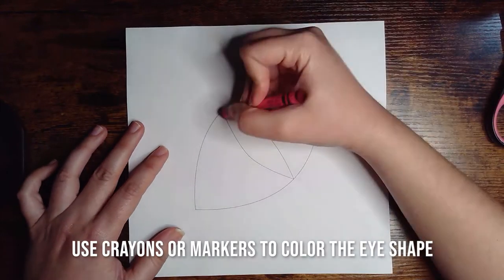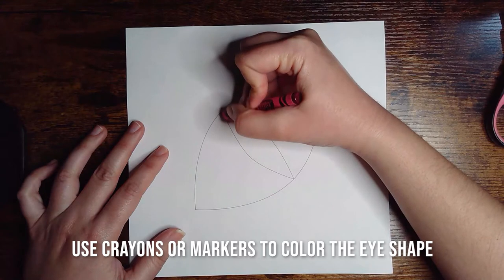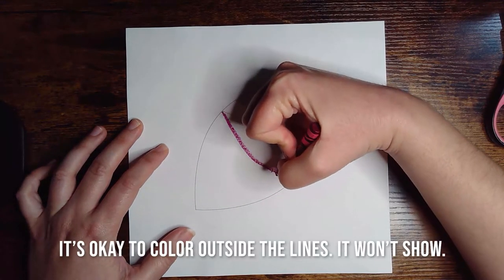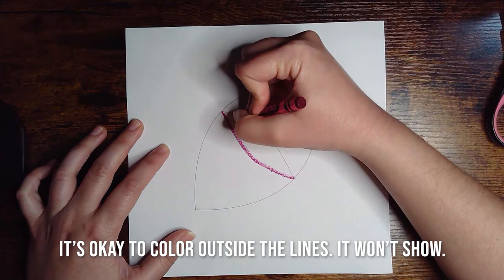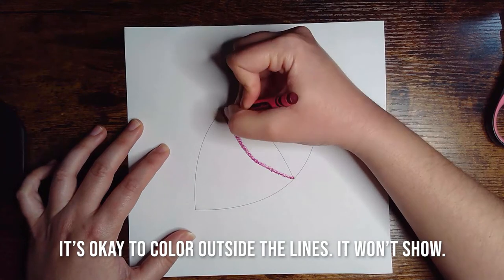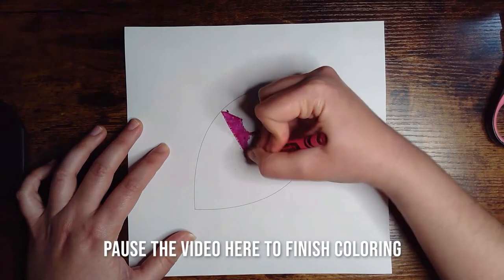Next, get your crayons or markers out, and it's time to color. It doesn't matter if you go outside the lines of the eye, because that won't show in the finished product. You might want to pause the video here while you finish coloring.